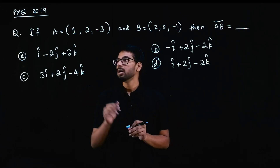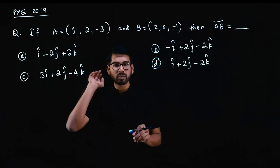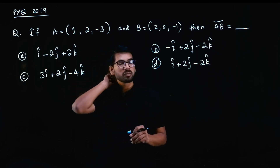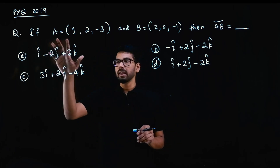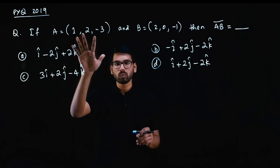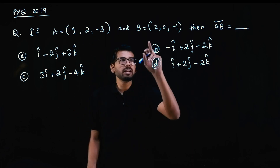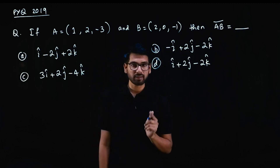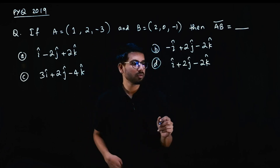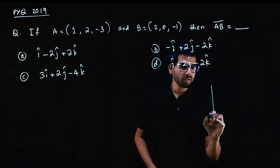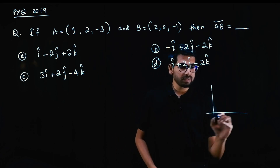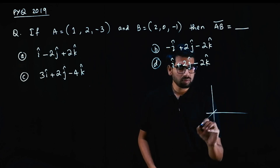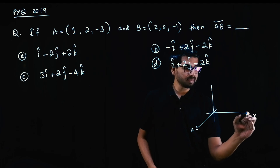This question is from the 2019 question paper, in the maths question paper. If a is equal to this point and b is equal to this point, then what is the AB vector? This is the graphical node — the XYZ axes.